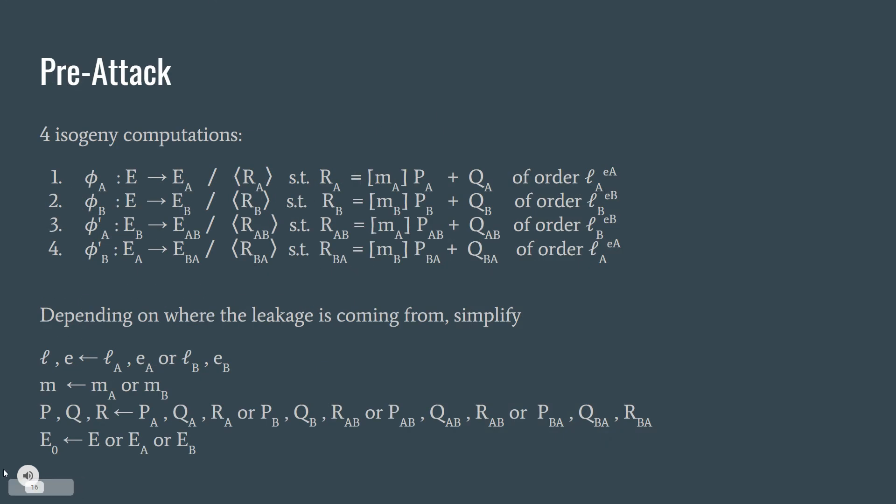In this general attack, we have listed four isogeny computations. For simplicity, we will call l and e is the one of La or ea or Lb or eb. m, the secret m, is one of ma or mb. E, P, Q, R is one of the Pa, Qa, Ra or the others. And the starting elliptic curve E0 is either EA or EB.